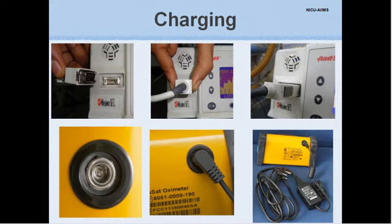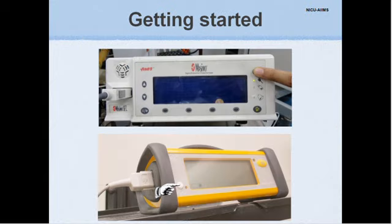There is a slot for connecting the charger in some pulse oximeters. A few on the other hand have a direct slot for AC power connection. Then the pulse oximeter should be switched on by pressing the on button at the front panel.